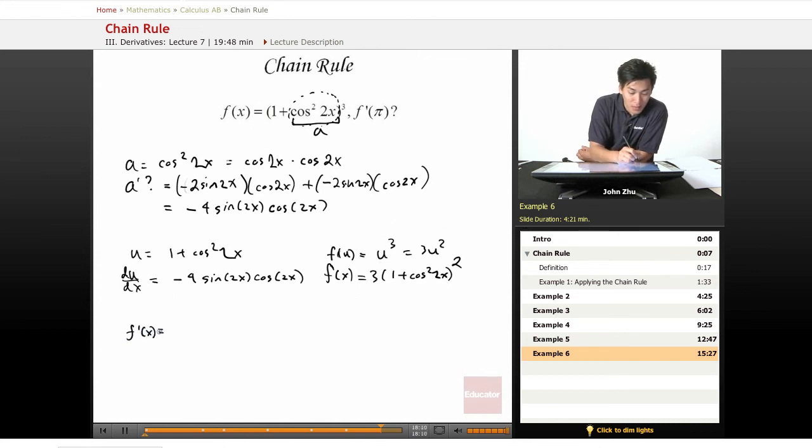And we know that dy dx or f prime of x equals our dy du term, which is 3 times 1 plus cosine squared 2x squared times our du dx term, negative 4 times sine of 2x cosine of 2x.